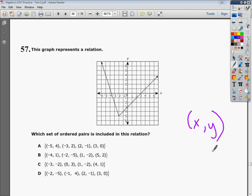So A, the first point says negative 5 and 4. On my x-axis, I'm going to go to negative 5, and I'm going to go up to 4 and see if the point is there. And it is, so that's a good start.